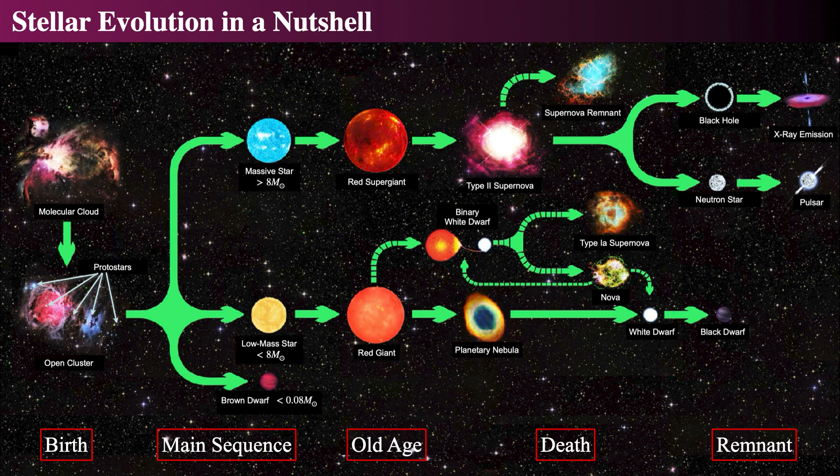Therefore they must be born, live a long life, and then die. This process is dependent on only a few things, but principally on the star's mass and composition.